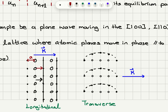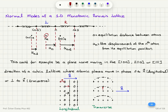On the other hand, for a one-dimensional Bravais lattice, all the atoms could be moving perpendicular to the k vector, which would represent a transverse wave. You would see that these atoms are displaced from their equilibrium positions perpendicular to the k vector — that would be the transverse wave. So we have two possible scenarios here.